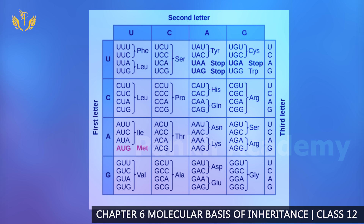In the table, there are some special codons. The stop codons — there are three of them — are UAA, UAG, and UGA. These are the three stop codons. The initiator codon is AUG. This is a very important question: who is the stop codon and who is the initiator codon? It is very important to remember.